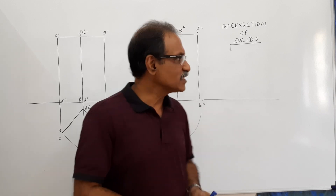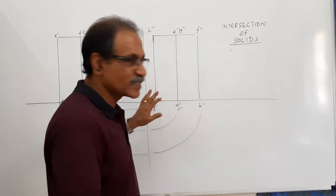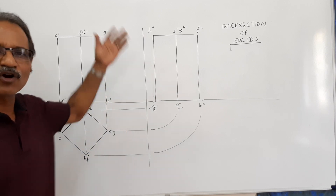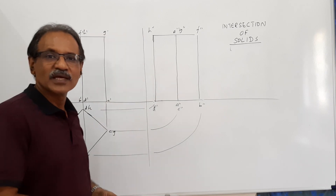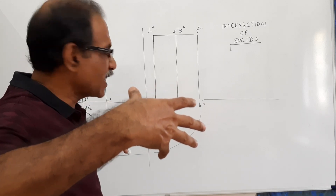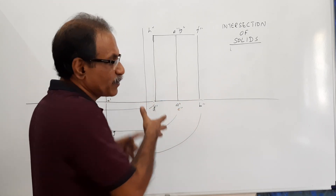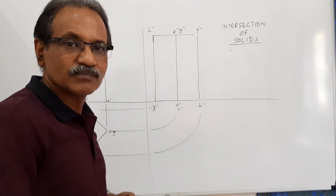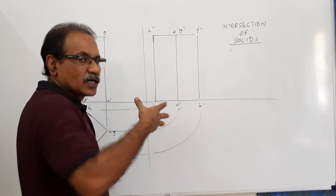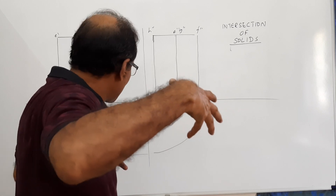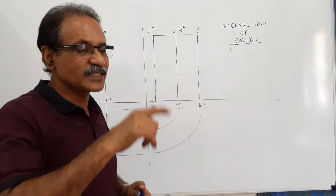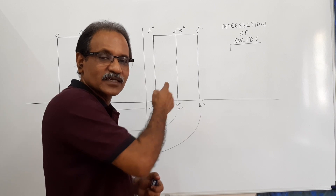Consider this: here is a wall. You penetrate a large cylindrical pipe into this wall perpendicular to it. What is the joint? The joint is a circle.